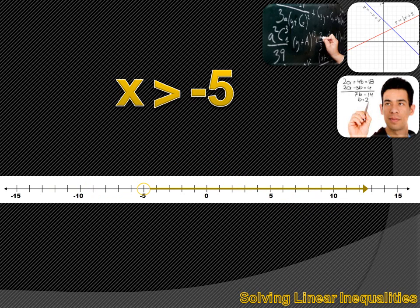What if this was X is larger than minus 5? It's not larger than or equal to — it's just larger than. So we want an open circle over minus 5, and then an arrow going to the right towards the larger numbers. What if it was X is less than or equal to minus 5? In that case, we fill in that circle — paint it in — and that indicates minus 5 is included in the set of solutions to X is less than or equal to minus 5.